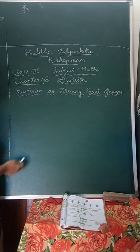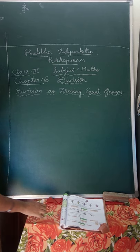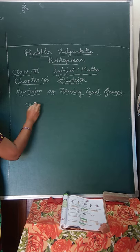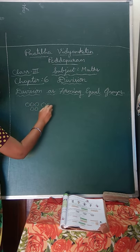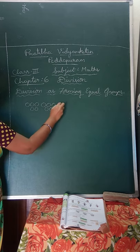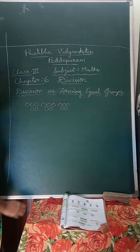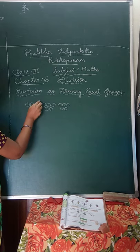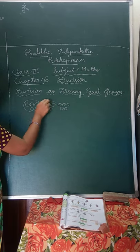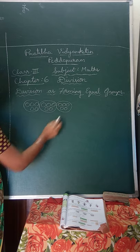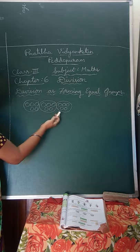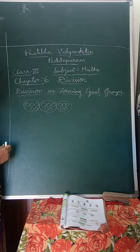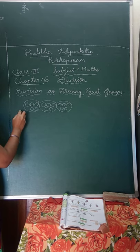The next topic is division as forming equal groups. Let us take 15 balls. We take 5 balls in one group. Now we understand — we take 15 balls and separate them, with 5 balls in each group.